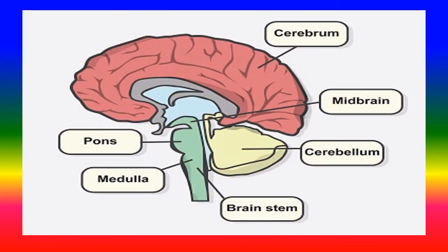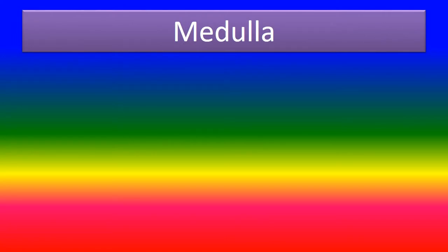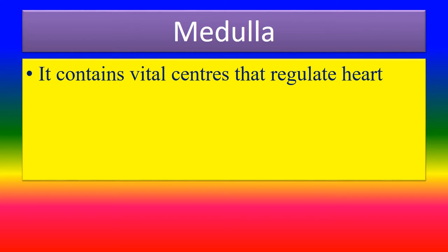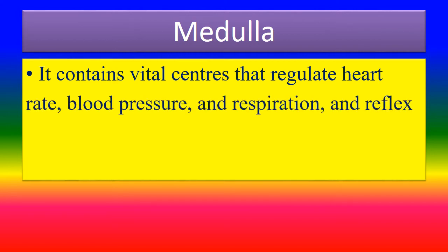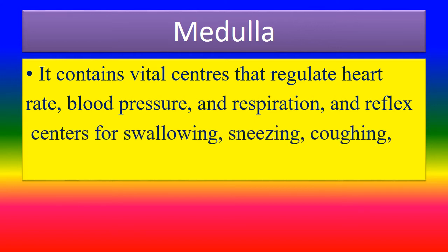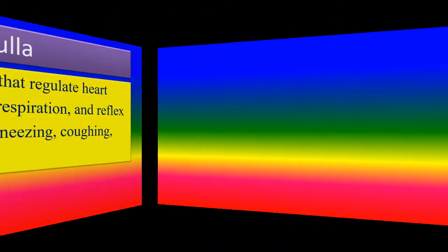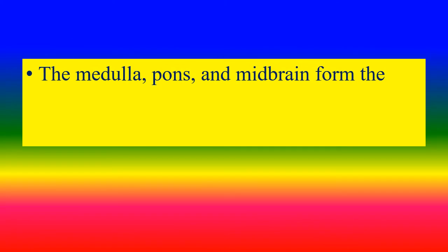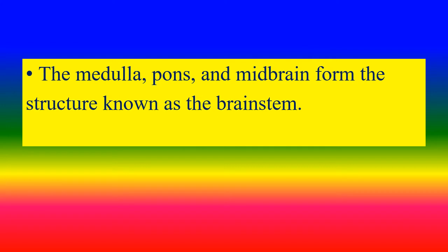Looking at brain pictures: pons, medulla, cerebrum, midbrain, cerebellum, and brainstem. The medulla contains vital centres that regulate heart rate, blood pressure, and respiration, as well as reflex centres for swallowing, sneezing, coughing, and vomiting. The medulla, pons, and midbrain together form the structure known as the brainstem.